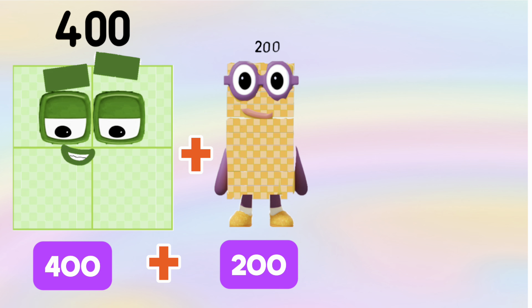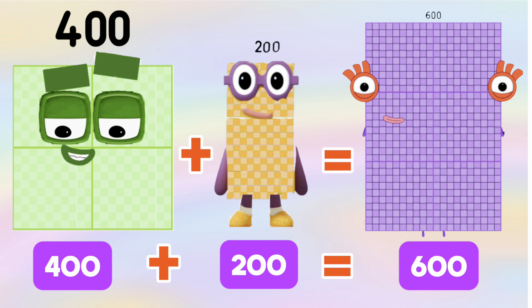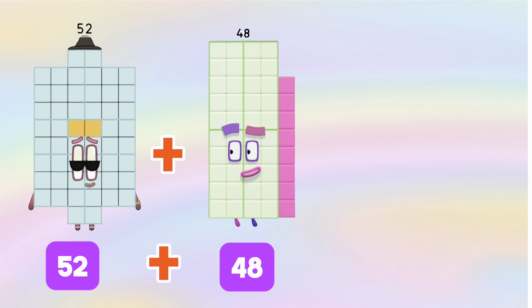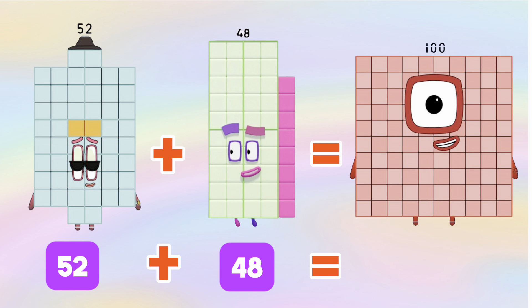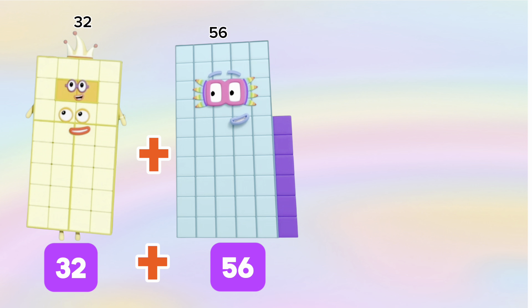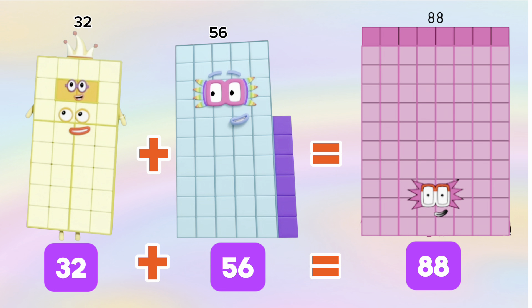400 plus 200 is equals to 600. 52 plus 48 is equals to 100. 32 plus 56 is equals to 88.